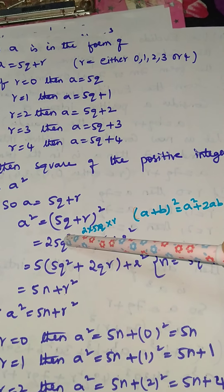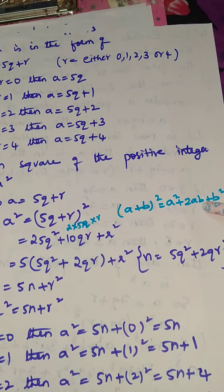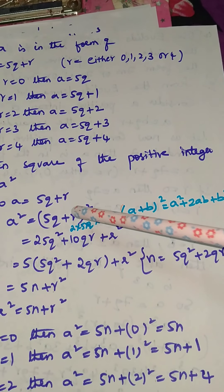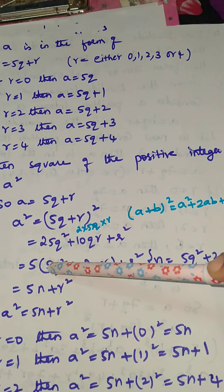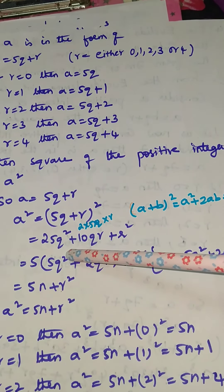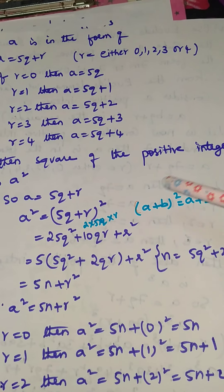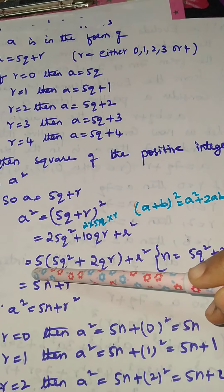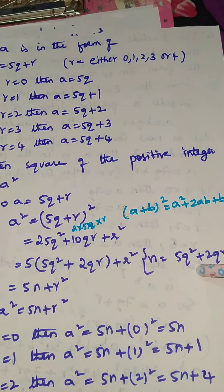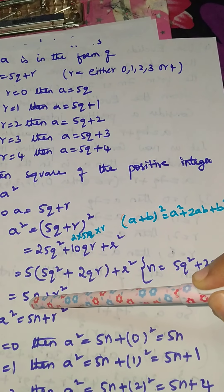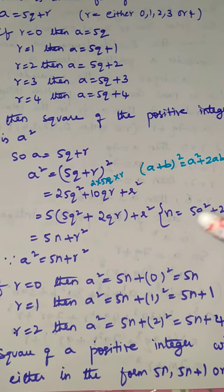That gives us 25q² plus 10qr plus r². Taking 5 as common from the first two terms: a² equals 5(5q² + 2qr) plus r². We let n equal (5q² + 2qr), so a² equals 5n plus r².